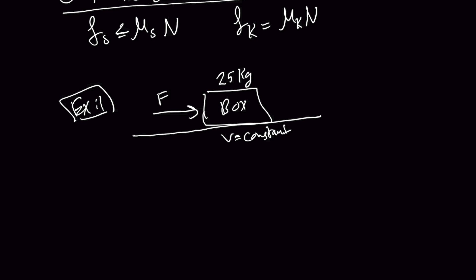If you have no idea what this clue means, make sure you watch our lesson on Newton's second law, which says F equals ma — it only applies if you have a net force. But in this case the net force is zero, so we have constant velocity. This hint tells us we're going to have friction in the other direction. Since the box is moving, this is going to be kinetic friction, which cancels force F. The coefficient of kinetic friction is given as 0.2.